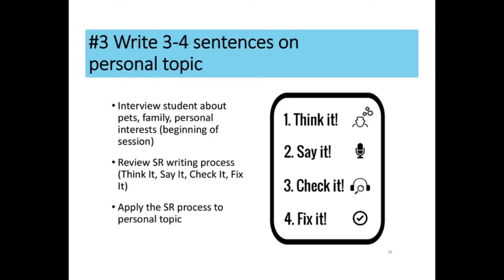On to step three: having the student write three to four sentences on a personal topic. Whenever I first work with a student, I do a little interview — I get to know them, ask about their pets, what they like to do at home, their family and personal interests. This builds comfort and gives me content to write about that's personal to them. Then I review the speech recognition process — think it, say it, check it, fix it — and we apply it to writing sentence by sentence on a personal topic.